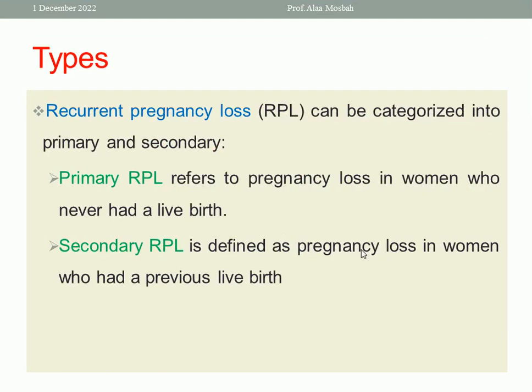What are the types of recurrent pregnancy loss? It may be primary or secondary. If the woman has had a previous live birth, we consider it secondary. If she has not had any previous live birth, it is called primary.